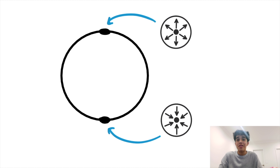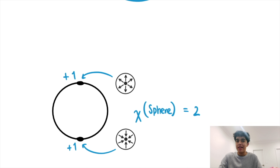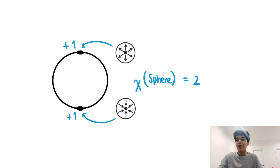Going back to our sphere: we know the sphere has two zero vectors, one at the top and one at the bottom. Zooming in on those two zero vectors, both vector fields have an index of plus one. We also know a sphere has an Euler characteristic of two. Thus the Poincaré-Hopf theorem holds true, as the sum of the indices at every zero point — which is plus two — equals the Euler characteristic of the surface, also plus two.